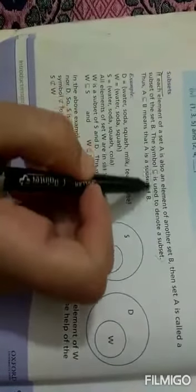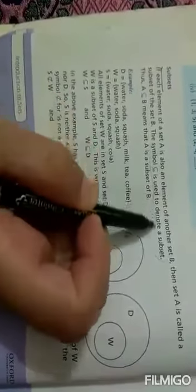First, let's mark subset definition. If each element of set A is also an element of another set B, then A is called the subset of B. This symbol is used to denote a subset. Thus, A is a subset of B means that A is a subset of B.